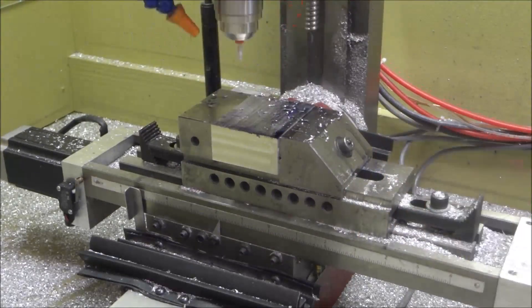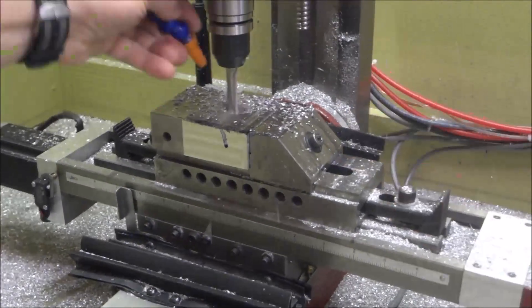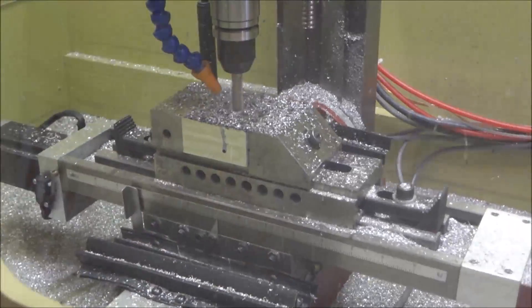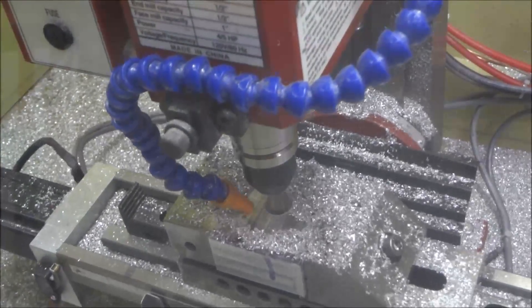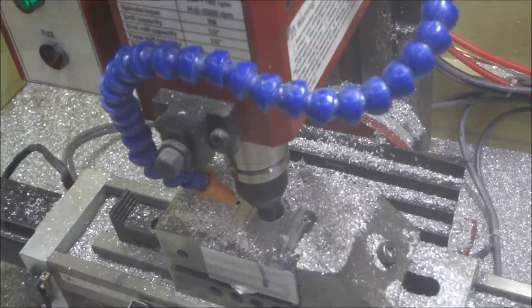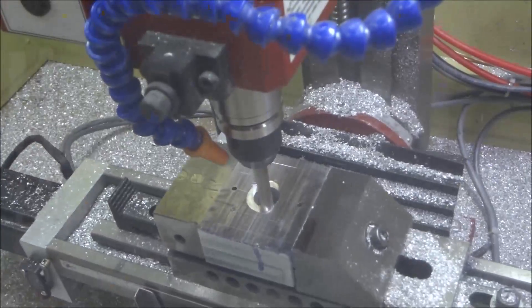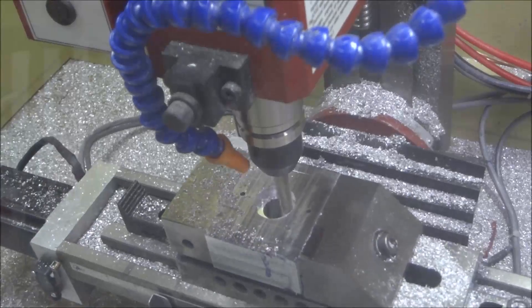I decided to go ahead and use the mini mill. You guys have seen me bore many holes on the Precision Matthews manually, so I didn't think that using the CNC machine here would take away from the build. If you don't have a CNC machine, by all means you can do it manually.